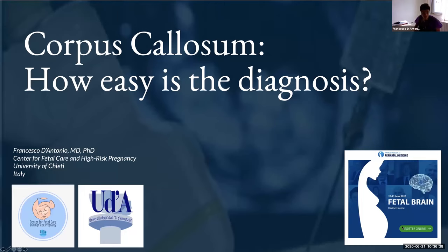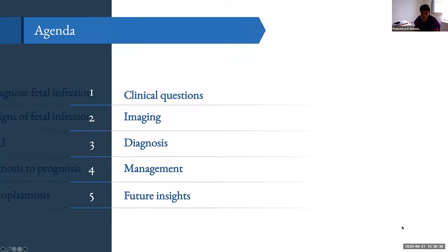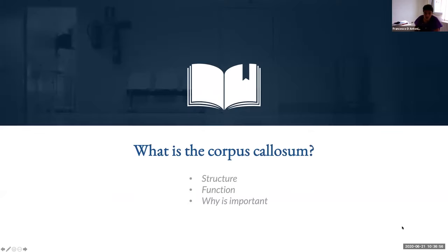Good morning everyone. I'm talking from the center of Italy. The topic of this talk is about corpus callosum anomalies, especially focusing on two main issues: complete and partial agenesis of the corpus callosum. During this brief talk I will go through a series of clinical questions on diagnosis, prognosis, and counseling of this anomaly.